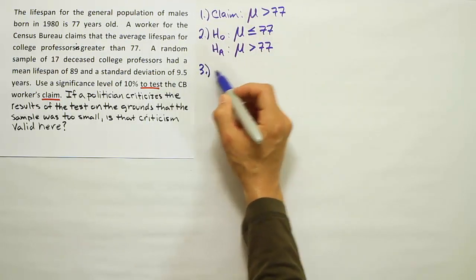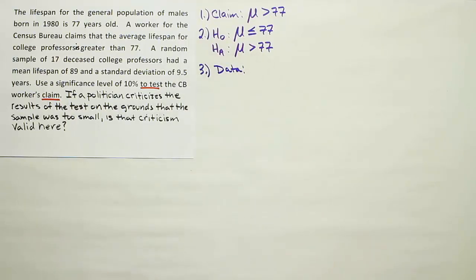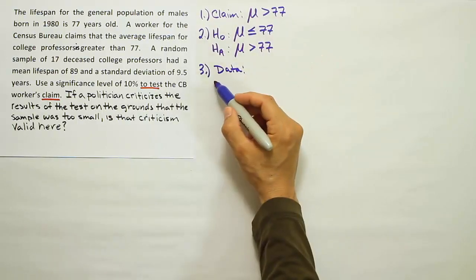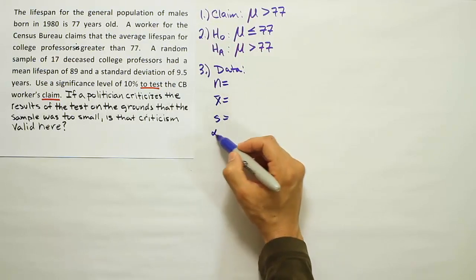Step three is our data step. This is the step where we record all the data that's given to us in the problem that helps us calculate our test stat. For a test about the mean, we're usually given n, x̄, a standard deviation, and alpha.